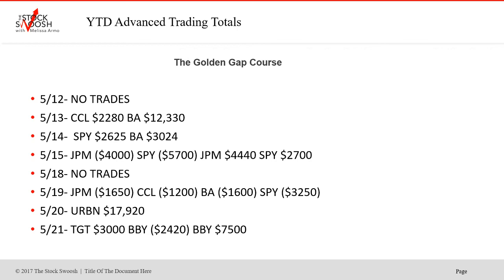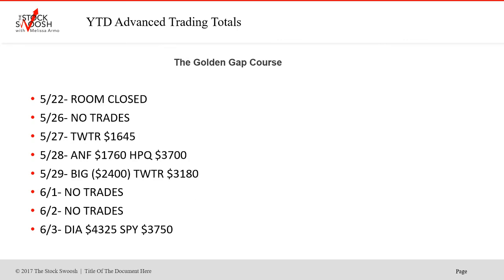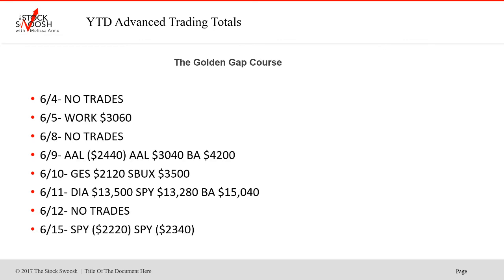No trades on the 18th. May 19th, JPM lost, CCL lost, BA lost, SPY lost. May 20th, Urban won big. May 21st, Target won, BBY — one loser and one winner. May 22nd room closed, no trades on the 26th, Twitter on the 27th, ANF on the 28th, HPQ won — that's always a fun stock to trade. May 29th, big lost, Twitter won, no trades on the 1st and 2nd.